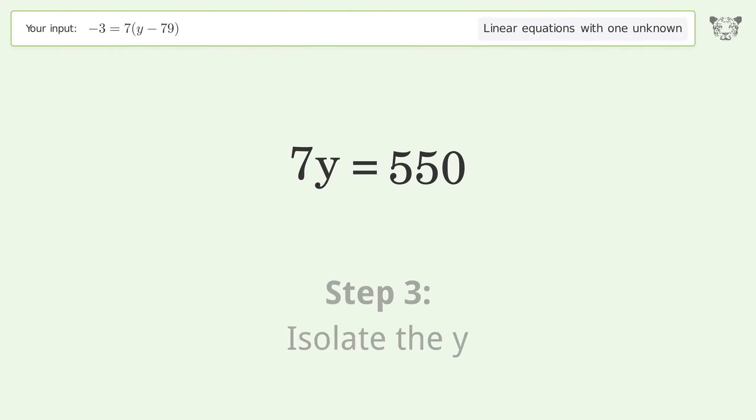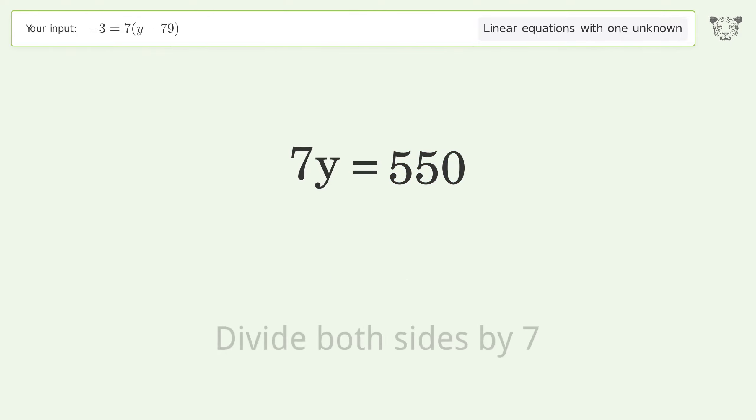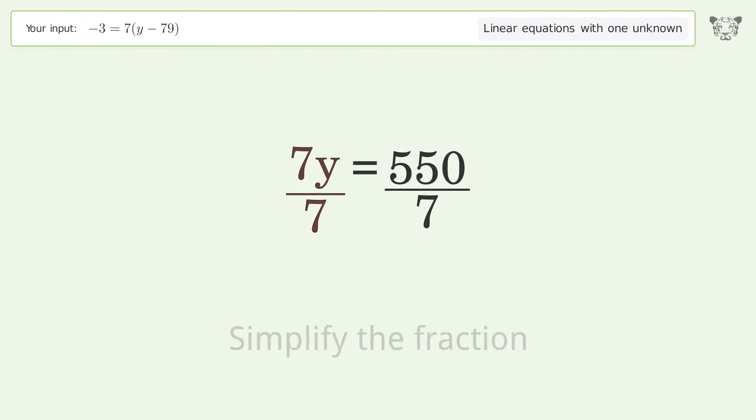Isolate the y by dividing both sides by 7, then simplify the fraction.